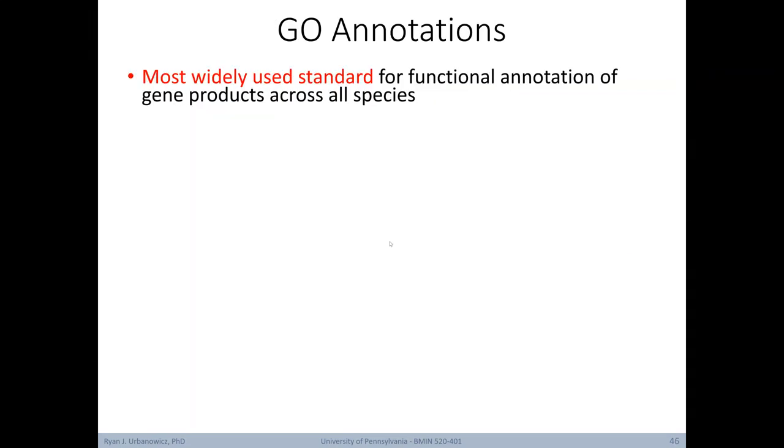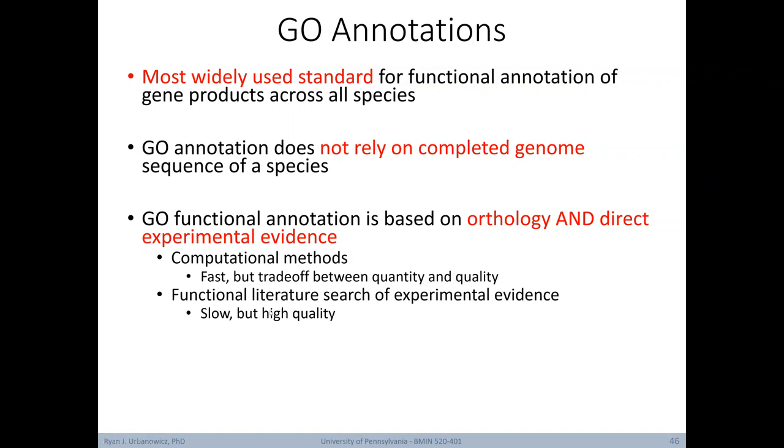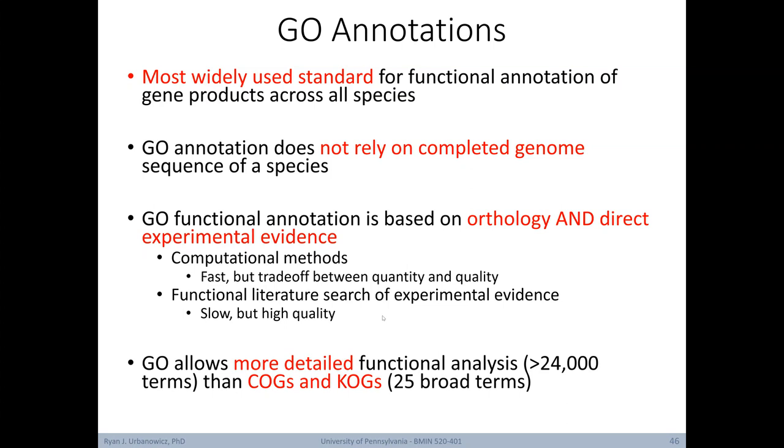To date, GO is the most widely used standard for functional annotation of gene products across all species. Notably, GO annotation does not rely on completed genome sequences of a species. As we've seen, GO's functional annotation is based on both orthology and direct experimental evidence. While computational methods are fast, there's a tradeoff between quality and quantity. On the other hand, functional literature search for experimental evidence is really slow but gives you the highest quality annotations. Further, GO allows a more detailed functional analysis, given that it includes over 24,000 unique terms. This is in contrast to ontologies like COG and KOG, which only include 25 broad terms.